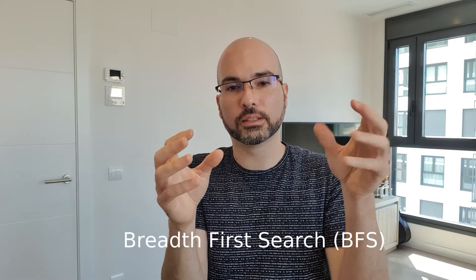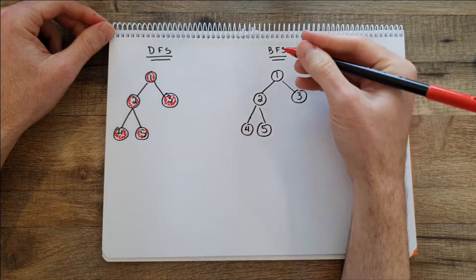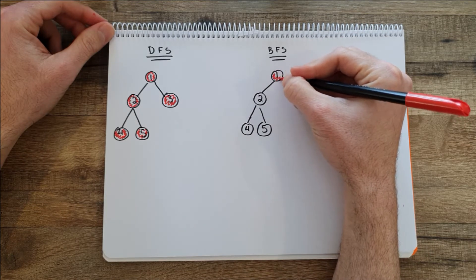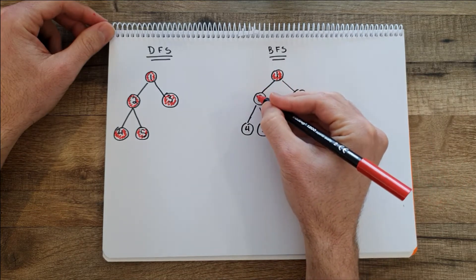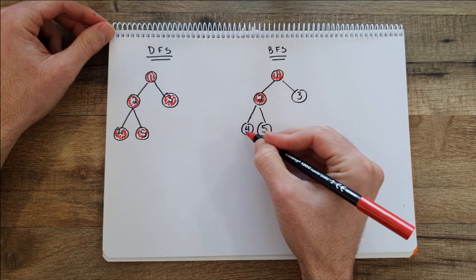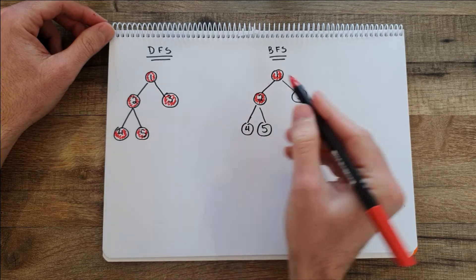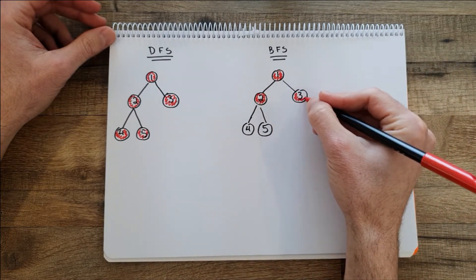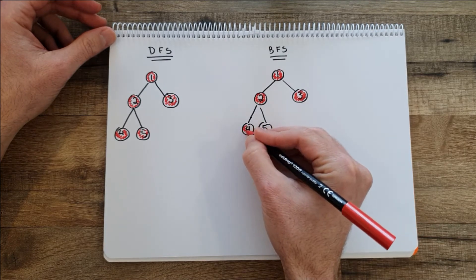Then we get to BFS, or Breadth-First Search, which is the counterpart to DFS. Opposite to DFS, which goes deep into one node and its children, in BFS you try to discover all the nodes at one level first. After you've visited them all, you go to the next level. Using the same tree as before, starting from node 1, the next node to visit is node 2. But instead of going to nodes 4 and 5 as in DFS, we go breadth-first — we visit node 3 first and then go to 4 and 5.